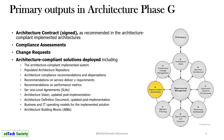Change requests are also an output of Phase G and will be input for Phase H. The architecture-compliant solutions deployed include the architecture-compliant implemented system, populated architecture repository, SLAs, recommended service delivery requirements, and the architecture definition document — updated if any updates were needed post-implementation, including architecture building blocks. What you need to remember: the signed architecture contract is the main output, along with compliance assessments and change requests.